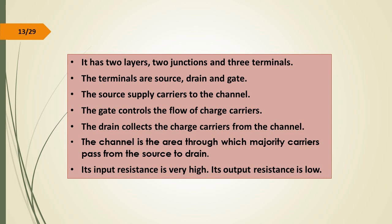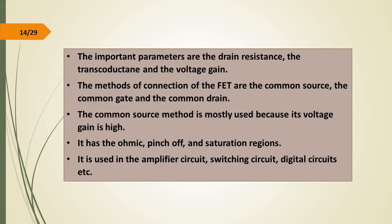The terminals are the source, the drain, and the gate. The source supplies carriers to the channel, the gate controls the flow of charge carriers, and the drain collects the charge carriers from the channel. The channel is the area through which the majority carriers pass from the source to the drain. Its input resistance is very high and output resistance is low. The important parameters of the JFET are the drain resistance RD, the transconductance GM, and the voltage gain AV. The methods of connection are the common source, the common gate, and the common drain. The common source method is mostly used because its voltage gain is high.